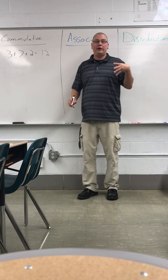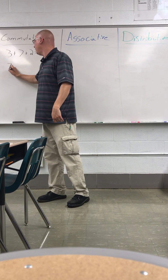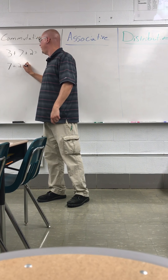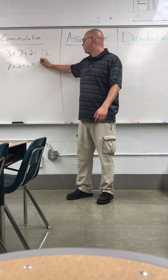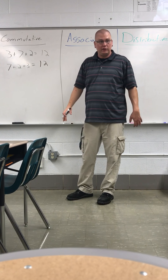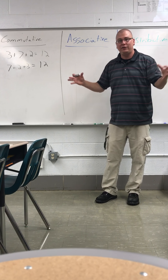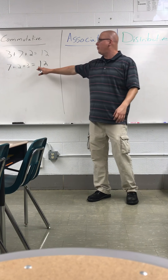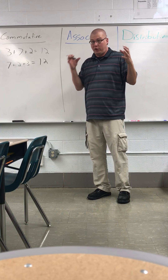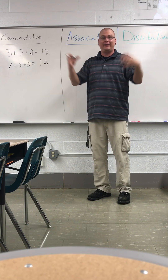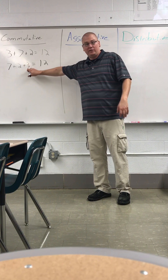With the commutative property, if I have seven things plus two things plus three things, I'm still going to get twelve things. These properties work because we're putting things in groups. The same property works in multiplication as it works in addition because in multiplication, really what we're doing is adding groups together — here we're just adding pieces together.